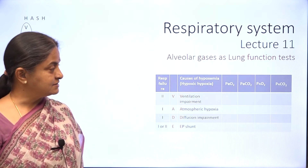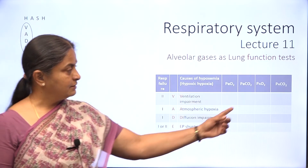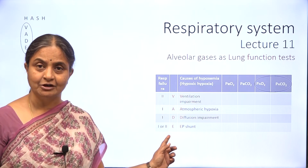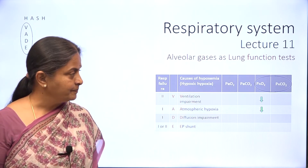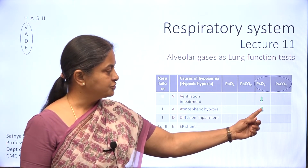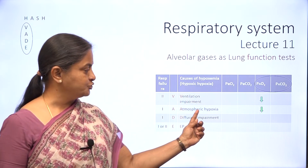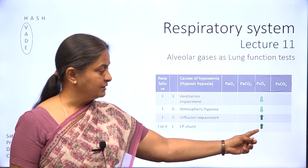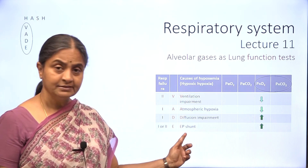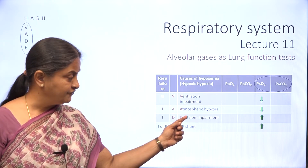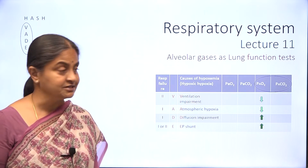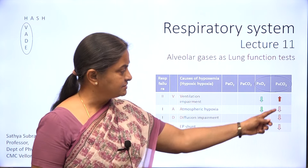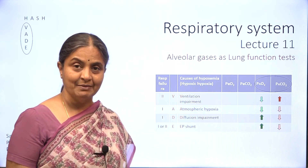Alveolar gases can help us differentiate between different pathological states in the lung. Alveolar oxygen is lower in two conditions — there is alveolar hypoxia — while it is higher in diffusion impairment and the last condition. Alveolar carbon dioxide is increased only in ventilation impairment.